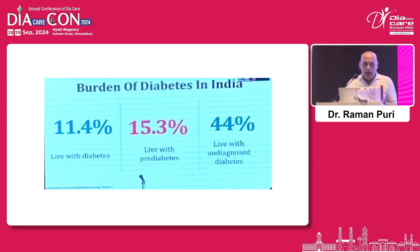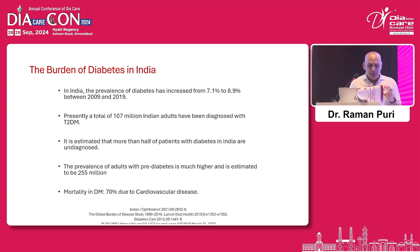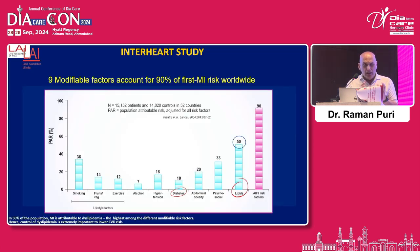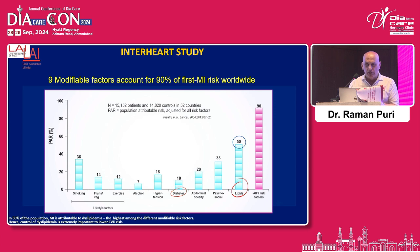There's nothing special I have to tell about diabetes because all of you are basically endocrinologists. We have an epidemic of diabetes in our country. My part comes because the majority of patients of diabetes die of cardiovascular disease, and majority of our diabetic patients are very poorly managed as far as dyslipidemia is concerned. The inter-heart study shows that the population attributable risk of dyslipidemia to acute myocardial infarction is highest — around 50%.